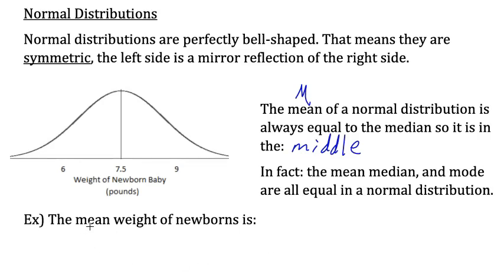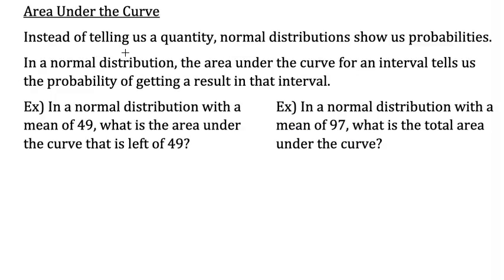For example, the mean weight of newborns is 7.5 pounds — that's the number in the middle. Instead of telling us a quantity, normal distributions show us probabilities.